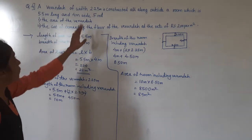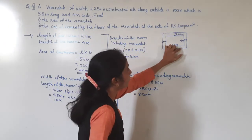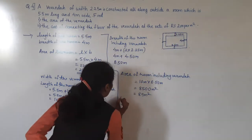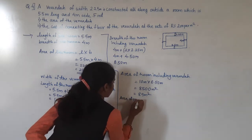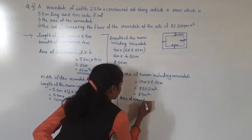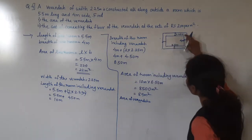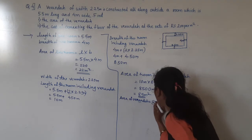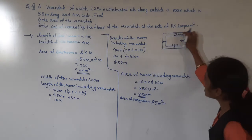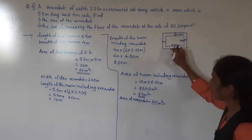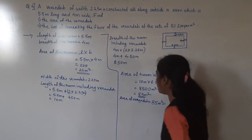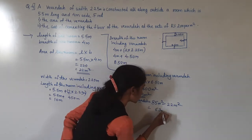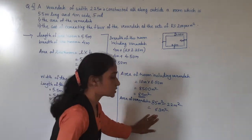Now we have to find the area of the veranda — this part. Area of veranda equals area of room including veranda minus area of room. So 85 meter square minus 22 meter square. 5 minus 2 is 3, 8 minus 2 is 6. Area of veranda is 63 meter square.